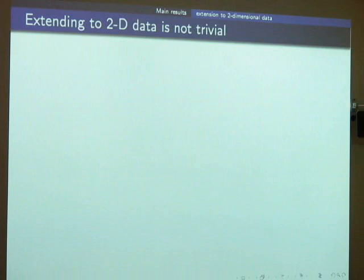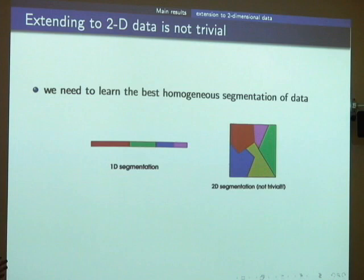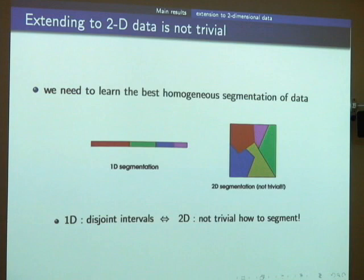So far STUD has been for the one-dimensional case. Extending to two-dimensional data is not trivial. In the one-dimensional case, you segment the data into distinct intervals and apply a fixed rule in each. In two-dimensional case, it's not obvious how to segment data into homogeneous regions. The extension of DUDE to 2D is straightforward since you apply the same fixed rule throughout, but this is not the case for STUD.